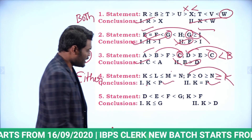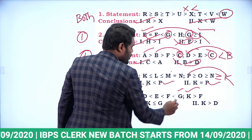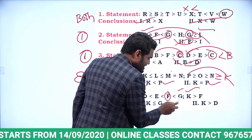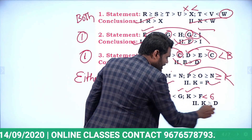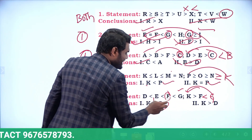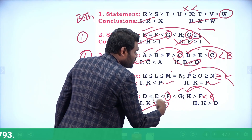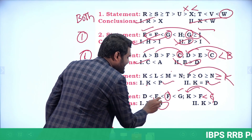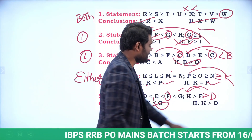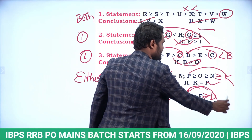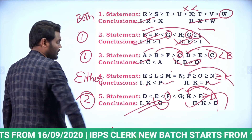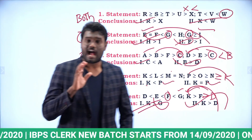Last coded inequalities question: relation between K and G, with F as common. F < G is opposite to the K-F relation, so opposite symbols means wrong for K and G. For K and D: F is common — D < F means F > D, and K > F means K > D. So K > D is the right answer. Only conclusion two follows.